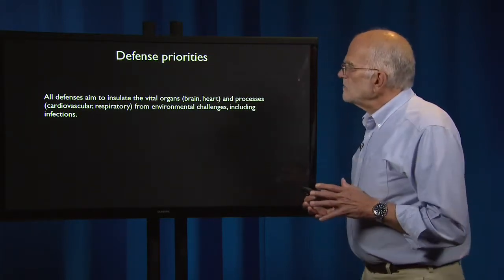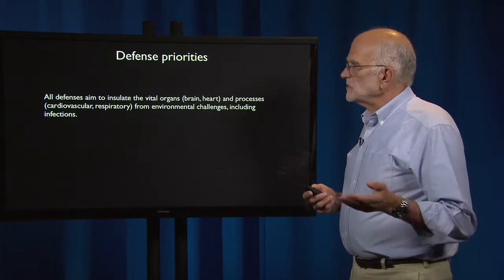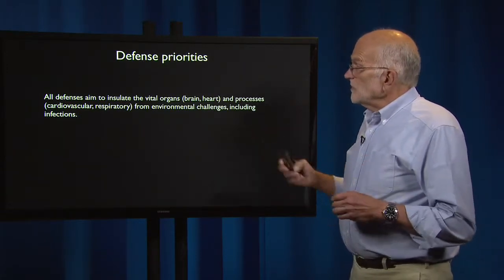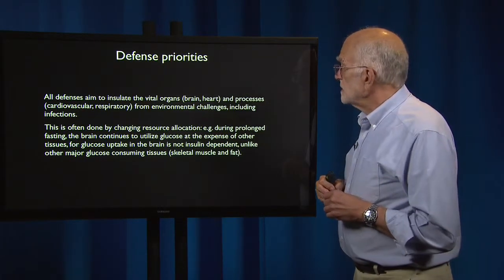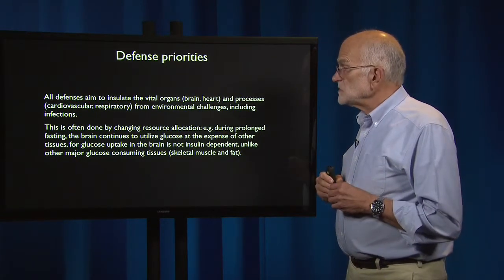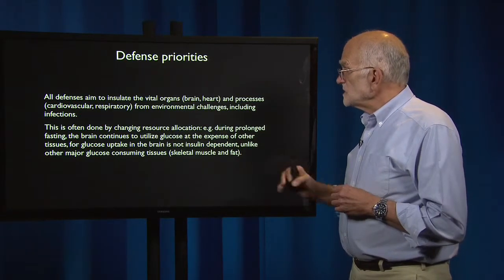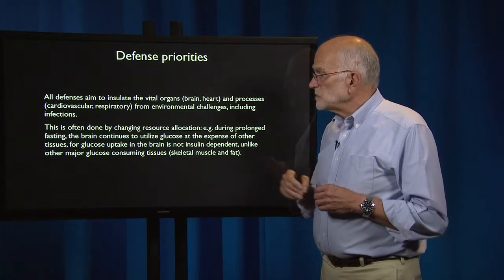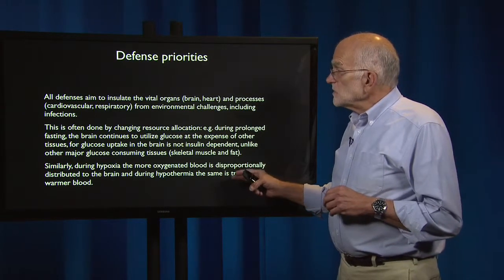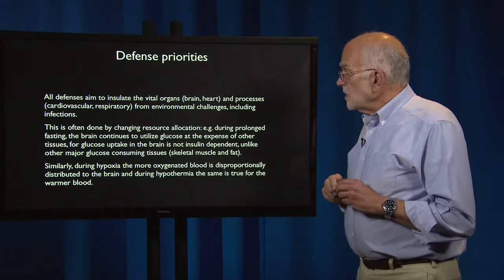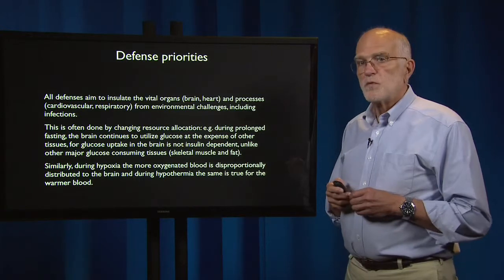All defenses aim to insulate vital organs first — the brain and heart and the cardiovascular and respiratory processes — from environmental challenges. This is often done by changing resource allocation in the body. During prolonged fasting, the brain continues to utilize glucose at the expense of other tissues, because glucose uptake in the brain is not insulin dependent, unlike other major glucose-consuming tissues such as skeletal muscle and fat. Similarly, during hypoxia, more oxygenated blood is disproportionately distributed to the brain; during hypothermia, the same is true for the warmer blood.